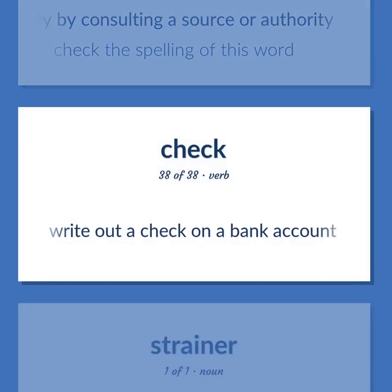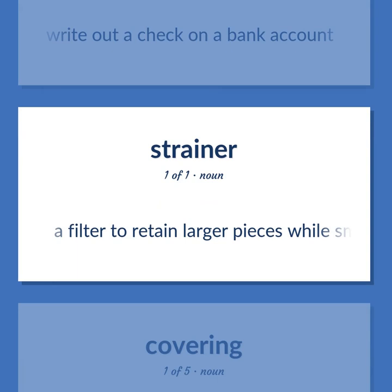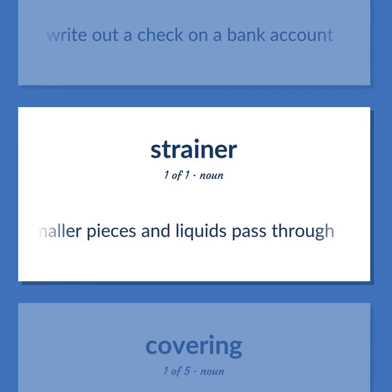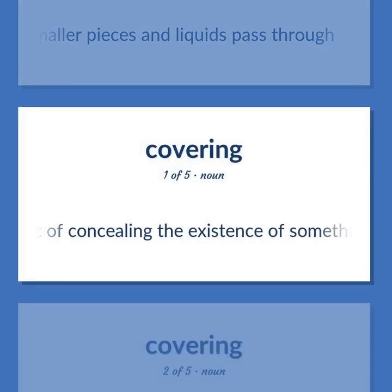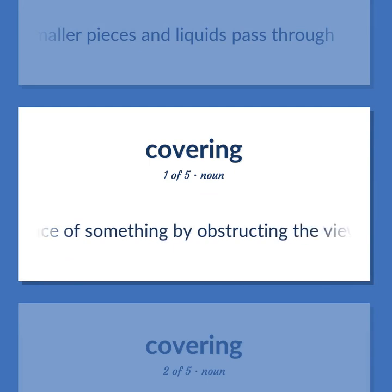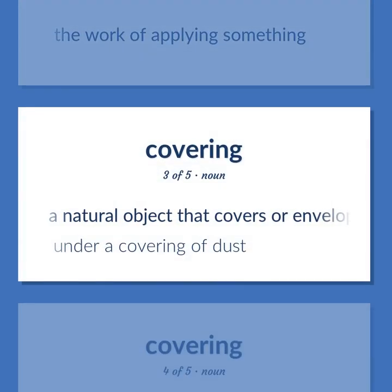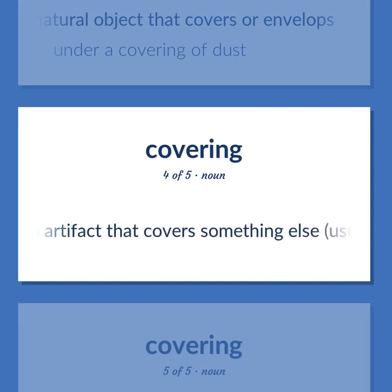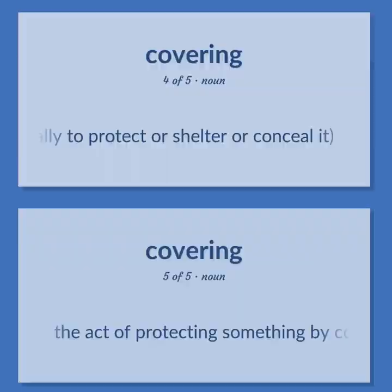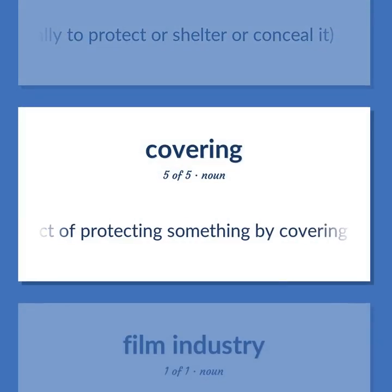Write out a check on a bank account. A filter to retain larger pieces while smaller pieces and liquids pass through. The act of concealing the existence of something by obstructing the view of it. The work of applying something. A natural object that covers or envelops. Under a covering of dust. An artifact that covers something else, usually to protect or shelter or conceal it. The act of protecting something by covering it.